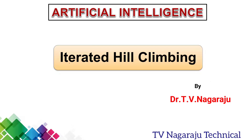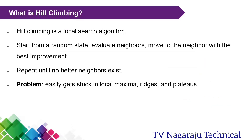Welcome to our channel. In this session we are going to discuss iterated hill climbing in artificial intelligence. First, what is hill climbing? Hill climbing is a local search algorithm. We have different variants: regular hill climbing and stochastic hill climbing. Starting from one state, we evaluate all the neighbors and move to the neighbor with the best improvement, repeating this process until the best neighbor is found.